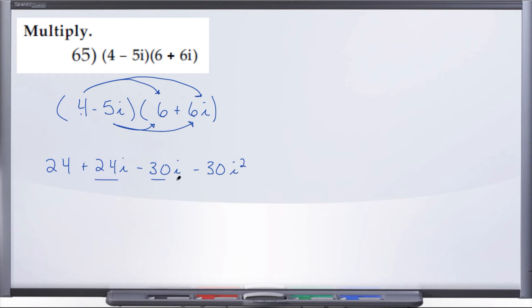So, let's go ahead and combine some like terms here. So, we have 24, and then 24 minus 30i is going to give us negative 6i, minus 30i squared.